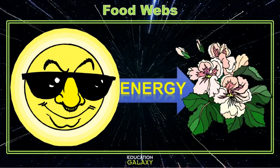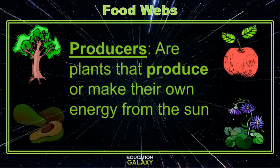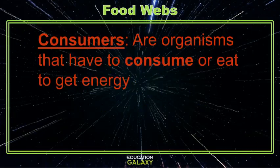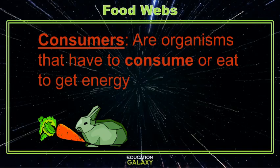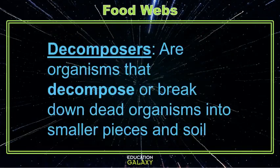The Sun's energy is used by plants, or producers, to make and produce their own energy. Plants can then be eaten or consumed by consumers. Consumers are any organism that eats to get energy. But consumers aren't just limited to eating producers or plants — they can also eat other consumers. There are even organisms that get their energy from eating dead material, and they're called decomposers, because they take dead material and decompose it into smaller pieces in soil.